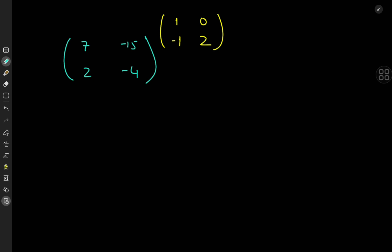It's interesting because it looks pretty cool, but it is problematic in terms of the mathematical formalism. We could define A raised to B in analogy to exponentials and logarithms — as e to the B times the logarithm of matrix A, or as e to the logarithm of matrix A times B. The reason this isn't clearly defined is that matrix multiplication isn't commutative, so you get different answers depending on the order.